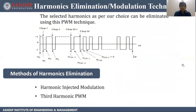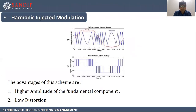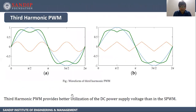Next is harmonic elimination or modulation techniques. Selected harmonics can be eliminated using PWM technique. The PWM signal has pulses of different widths. There are two main methods: harmonic injected modulation and third harmonic PWM. In harmonic injected modulation, a reference wave and a carrier signal produce the output voltage; advantages include higher amplitude of the fundamental component and lower load distortion. Third harmonic PWM provides better utilization of DC power supply voltage than SPWM.